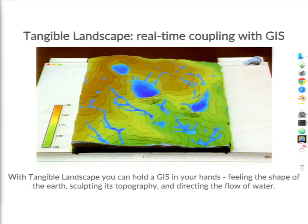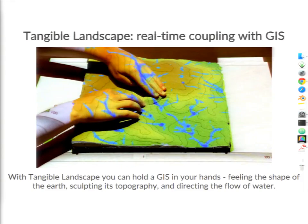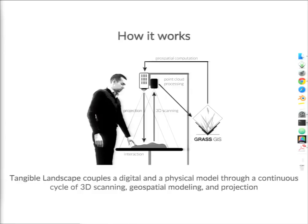This video gives you an idea of how it basically works. This is a model of a real place — you modify the topography, and this is translated into changes in the water flow pattern, so you get instant feedback. The 3D physical model is scanned by Kinect; the data is imported into GRASS GIS where we create a digital elevation model, run selected geospatial analysis, and create a composite image map which is then projected back on the model — through a continuous cycle of modifying, scanning, computing, and projection.